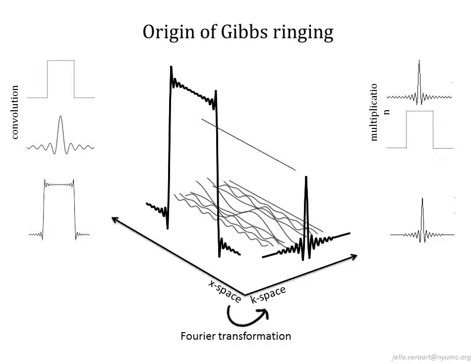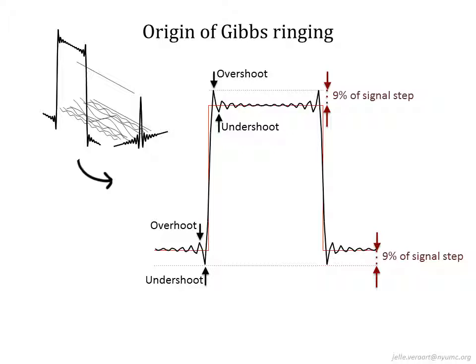The suppression of the high frequency components corresponds to a multiplication of the k-space with a box function. Multiplication in one domain corresponds to a convolution in the other space in the case of Fourier transformations. Since the Fourier transform of a box function equals a sinc function, the truncation of the k-space corresponds to convolution of the image with a sinc function. The amplitude of the undesired fluctuations is limited to 9% of the signal step, and undershoots and overshoots of the signal alternate between voxels.